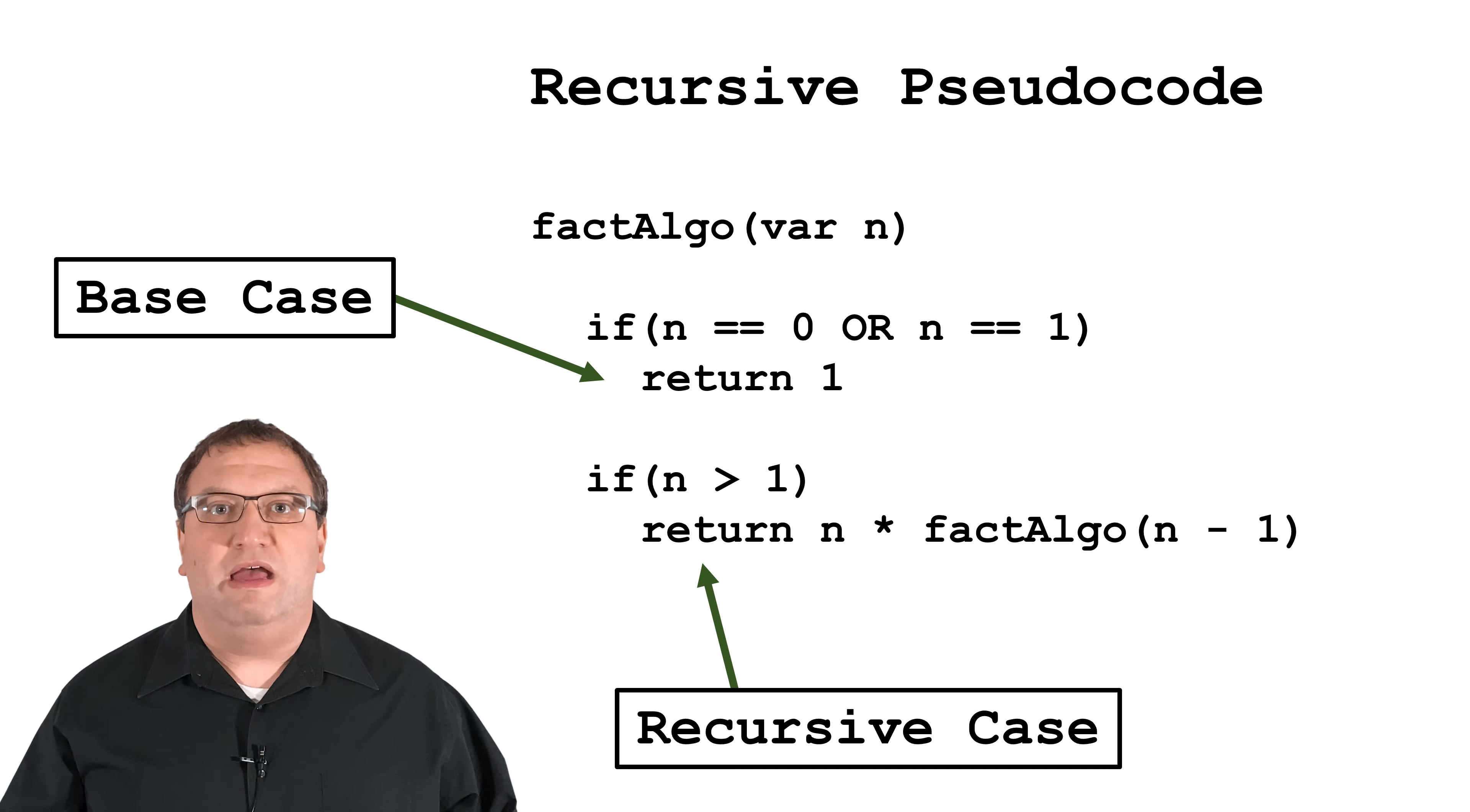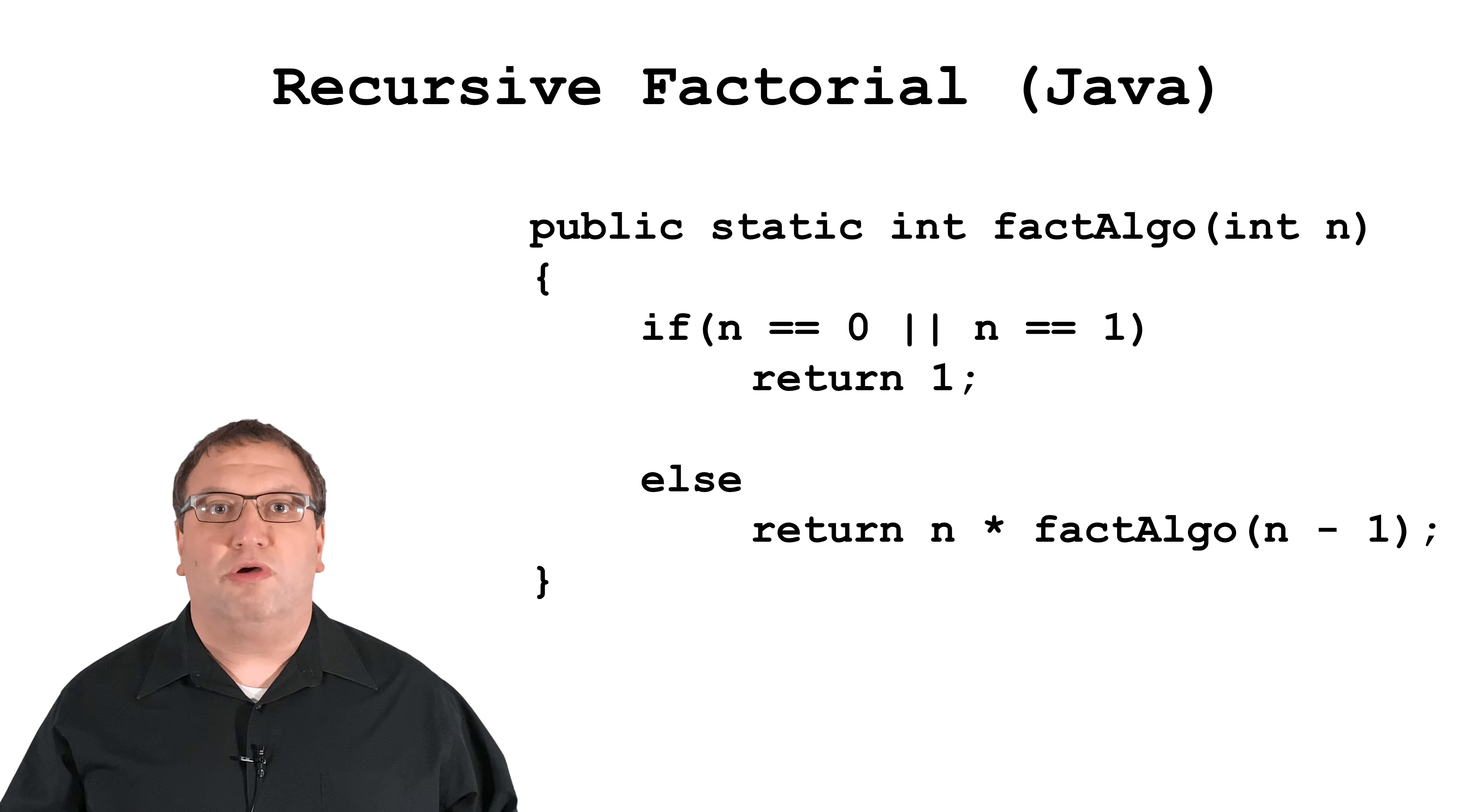But instead, imagine if you tried 100,000 factorial. You'd need 100,000 calls to fact-algo. You'd run out of space on the stack long before you hit the base case. This is one reason that some types of problems aren't well suited to recursion.